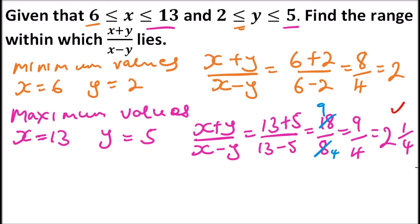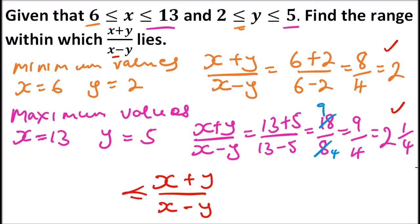This means that the maximum value of the expression is 2 and a quarter and the minimum value is 2. Therefore we can say x plus y divided by x minus y is greater than or equal to 2 and less than or equal to 2 and a quarter. That is how you work out that question — you may get yourself 3 marks. I hope you have followed how we have done that.